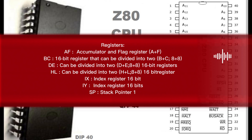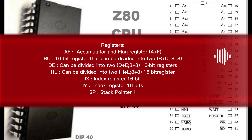HL — can be divided into two 8-bit registers H plus L, a 16-bit register. IX — index register, 16-bit. IY — index register, 16-bit.